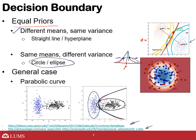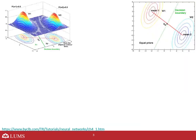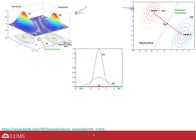Let's look at some examples. Here you are looking at contour plots and actual 3D plots. In the case of different means but same variances, where the distributions intersect, you get a straight line. In the case of the same mean but different variances, the intersection points act as the decision boundaries — inside one class and outside the other. In higher dimensions this becomes a circle or ellipse.